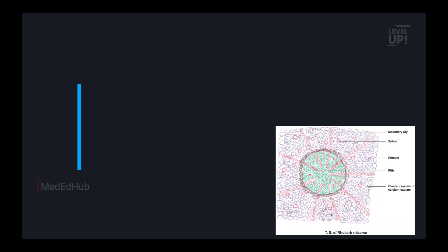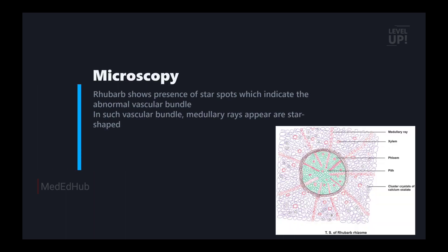Next we have microscopy. Rhubarb shows the presence of star spots, which indicates an abnormal vascular bundle. You can see the figure of a star spot. In such a vascular bundle, the medullary rays appear star-shaped.